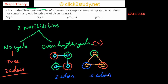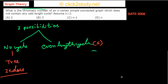This holds for any number of vertices: even-length cycles always need two colors and odd-length cycles always need three. So now, considering our graph which has no odd-length cycles — if there is only one even-length cycle, we can color it with two colors. And if there are more than one even-length cycle, let's examine what happens.